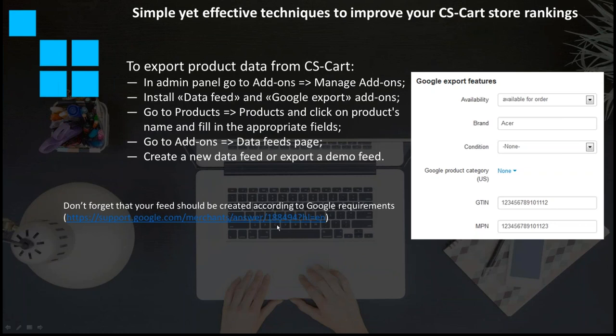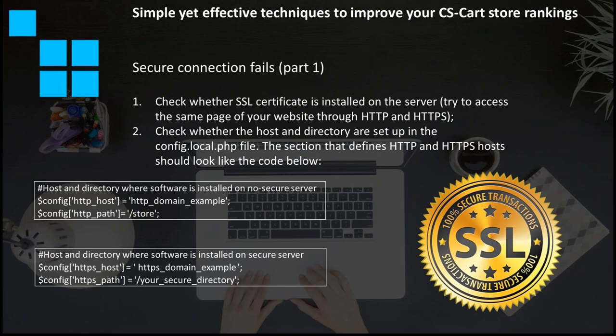Now moving on to the second CS-Cart issue — secure connection fails. About a year ago, Google announced that websites with secured connections will be ranked much higher in search results. Here is the algorithm showing how it can be analyzed and how you can find a fix. Some of the steps shown on this and the next slide can be fixed even by you, as it's a pretty simple issue. Some of them are not, so you will need your programmer. Here are the instructions.